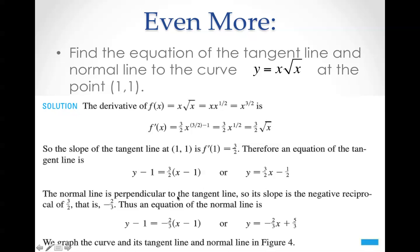The normal line is perpendicular to the tangent line, so its slope is a negative reciprocal of 3/2, which is negative 2/3. Thus, the equation of the normal line is as follows.